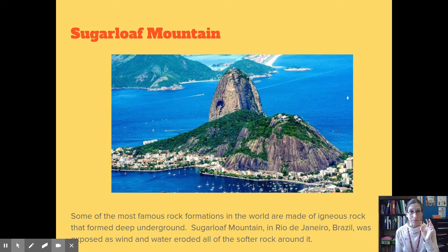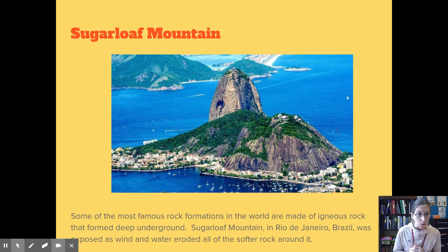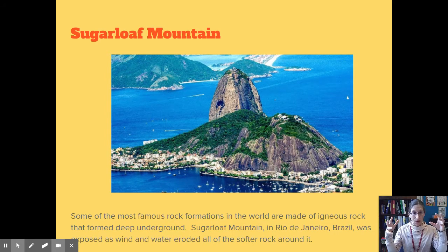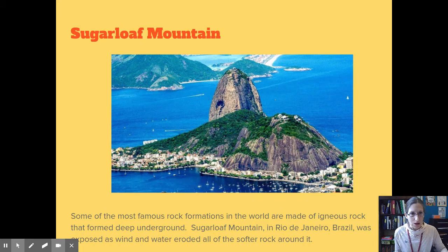Here's a really neat picture of Sugarloaf Mountain in Brazil. Some of the most famous rock formations in the world are made of igneous rock that formed deep underground. Sugarloaf Mountain in Rio de Janeiro, Brazil was exposed as wind and water eroded all the softer rock around it. Eventually the wind and water wore away the softer rock, leaving this enormous igneous rock formation — you can see hotels and apartment buildings at its base to get a sense of just how huge it is.